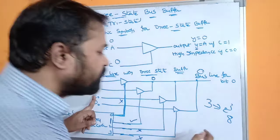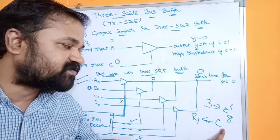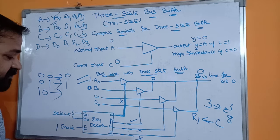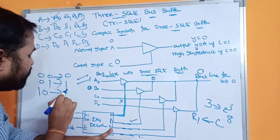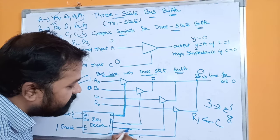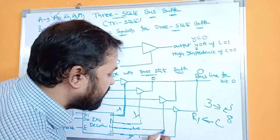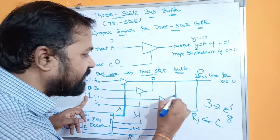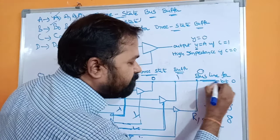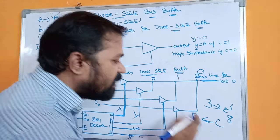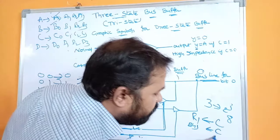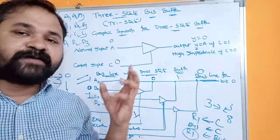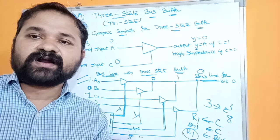For example, if we want to transfer data from register C to register R1, we apply selection inputs 1, 0. Then output 2 of the decoder becomes active while the remaining three become inactive. This activates the control input of the third three-state buffer. If C0 contains 1, the buffer outputs 1, which is placed on the bus. The output of the bus is connected to the input of R1, so this 1 is transferred to R1. In this way, we can implement a common bus system with the help of a three-state or tri-state buffer.